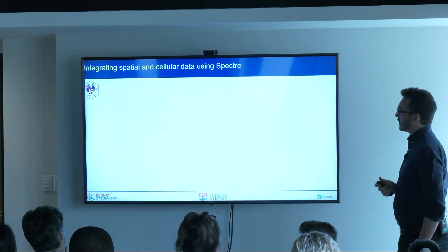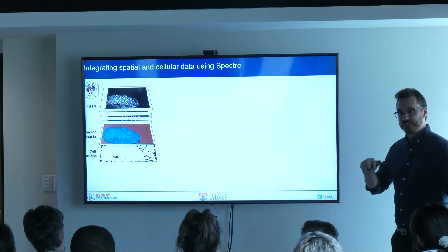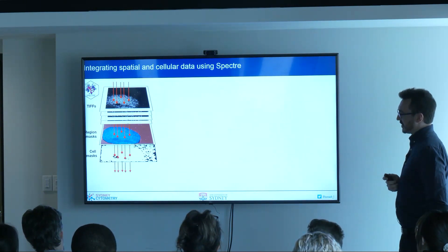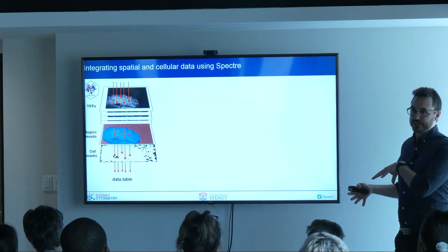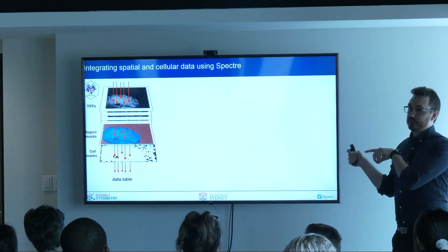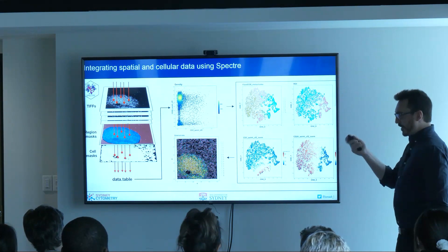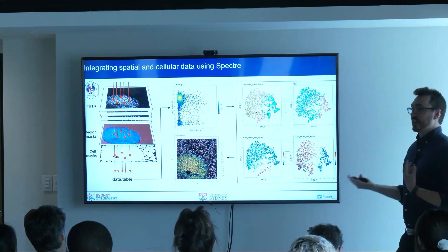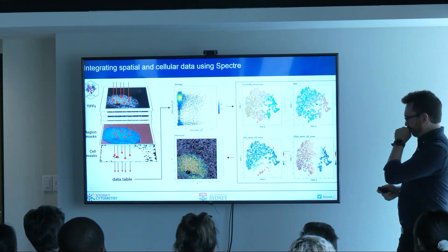All we're really doing for our spatial data is: once we've got the cell segmentation masks, the region mask, and any other classification from Ilastik, we pull together the cellular data for each of those masks and turn it into a giant table. Most algorithms work this way — you're going from spatial to single-cell data. Each row representing a cell has an X and Y coordinate, maybe some boundary information, and expression levels, kind of like normal cytometry data.